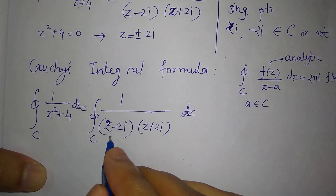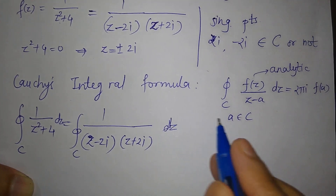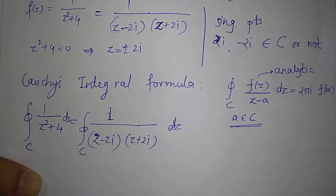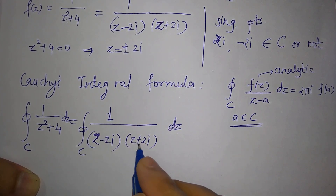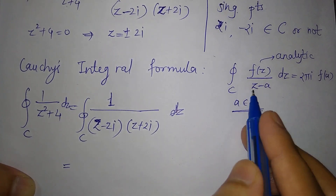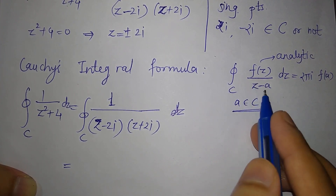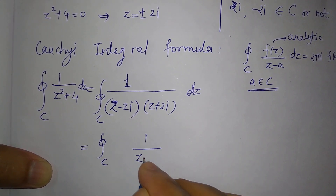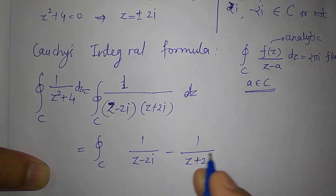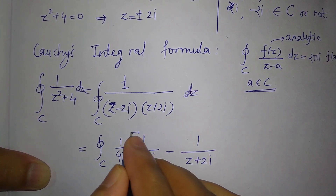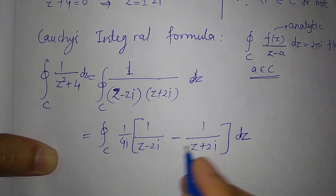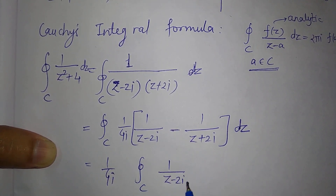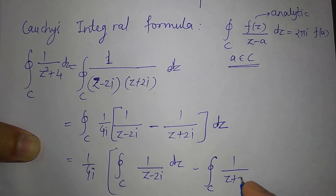Using partial fractions, the integral becomes (1/4i) times [integral of 1/(z − 2i) dz minus integral of 1/(z + 2i) dz]. Now 2i is a point inside C, and the numerator function f(z) = 1 is analytic everywhere. Applying Cauchy's integral formula to each term, the first integral equals 2πi·f(2i) = 2πi·1, and the second equals 2πi·f(−2i) = 2πi·1.